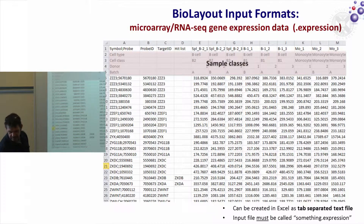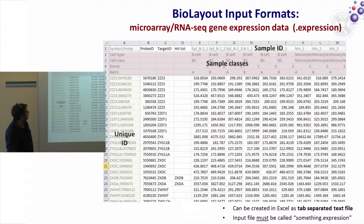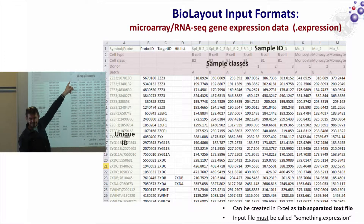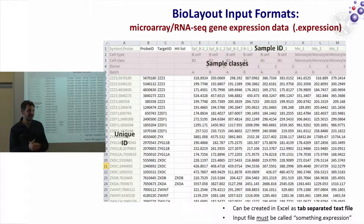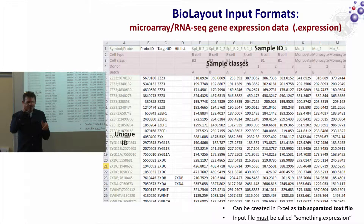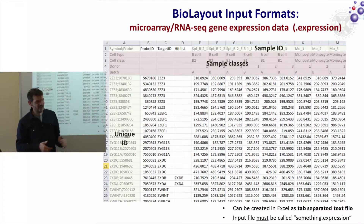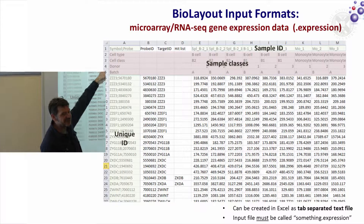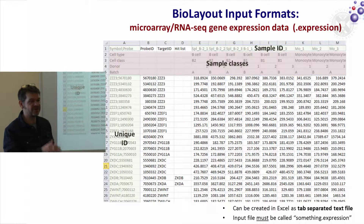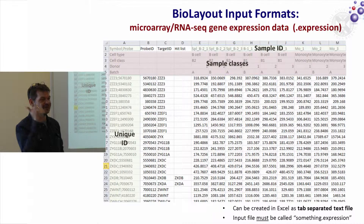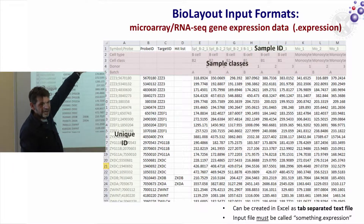The next thing is the sample ID. Make it simple, make it clear, make it understandable. 'Sample Z367896' — what does that mean? Call it 'Control 1 Brain' or whatever it is. Give it a meaningful name so that when you see something strange happening in that sample, you can immediately track it back and know what you're looking at.